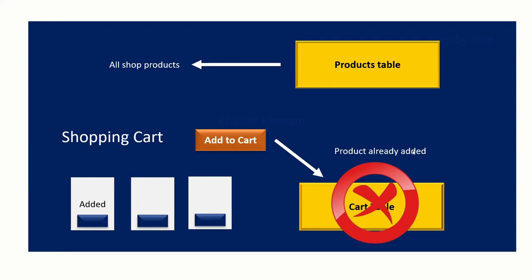When I click 'Add to Cart' for an already-added product, I should get an error or popup saying 'product is already added, you can add another product.' I should not be adding duplicate data inside the cart, because our cart will be storing unique data only.